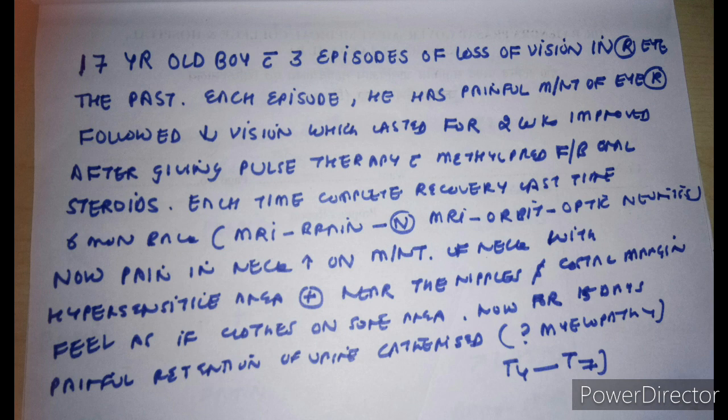How will you work up this patient? First, get a complete eye examination including fundus and visual acuity. Get visual evoked potentials (VEPs). Then repeat MRI — MRI cervical spine and MRI thoracic spine.